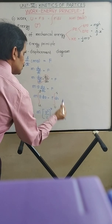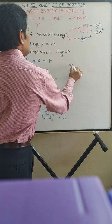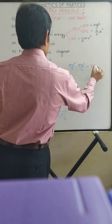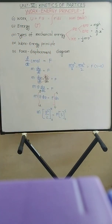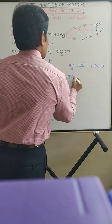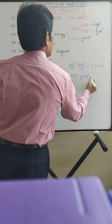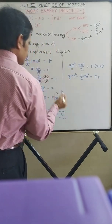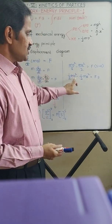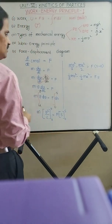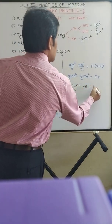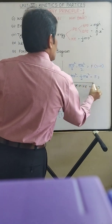Putting in the limits, we get MV²/2 − MU²/2 = F·S. This can be written as (1/2)MV² − (1/2)MU² = F·S. Here, (1/2)MV² is the kinetic energy at final velocity V, and (1/2)MU² is the kinetic energy at initial velocity U. So this is final kinetic energy minus initial kinetic energy, which is the change in kinetic energy, equal to force into displacement, that is the work done. This is known as the work-energy principle.